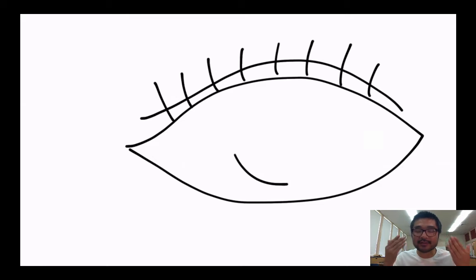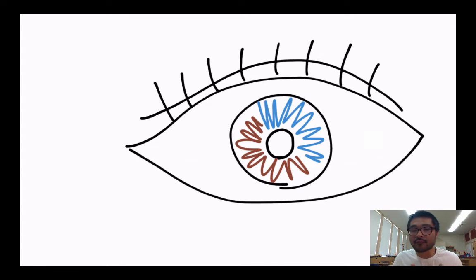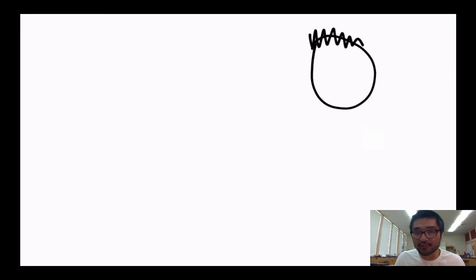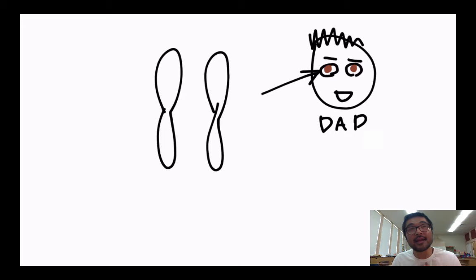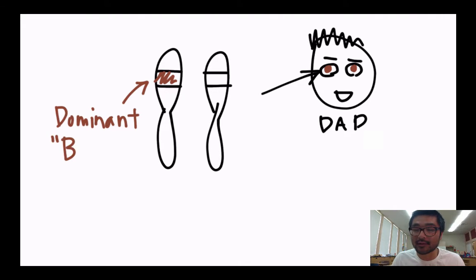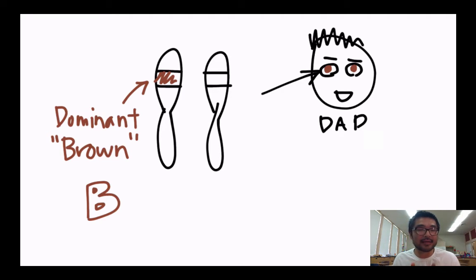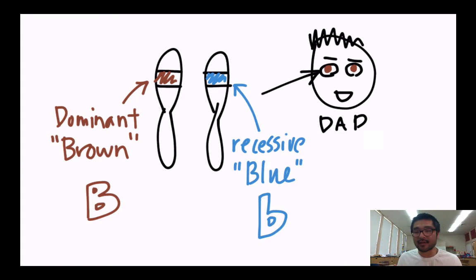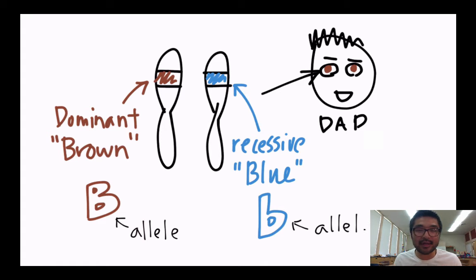Let's pick a trait — let's say eye color. Your father has the gene for his eye color and he has two alleles. Let's say he has a brown eye allele which is dominant, capital B, and a blue eye allele which is recessive, lowercase b. So he has capital B and lowercase b — those are his two alleles for that gene.